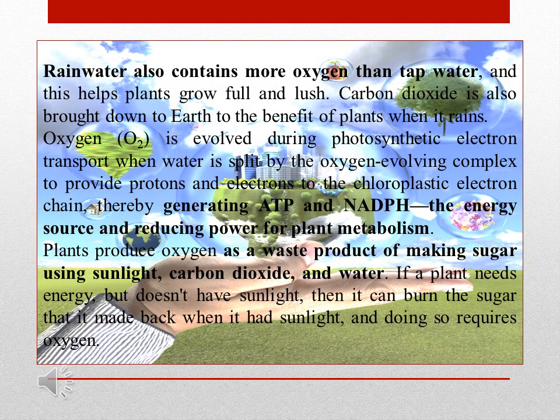Rainwater also contains more oxygen than tap water and this helps plants grow full and lush. Carbon dioxide is also brought down to Earth to the benefit of plants when it rains. Plants produce oxygen as a waste product of making sugar using sunlight.